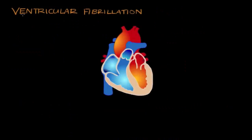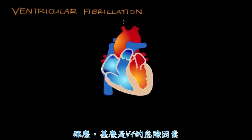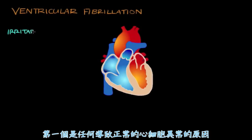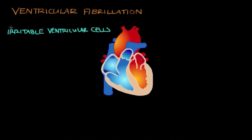What are the major risk factors of V-fib? I like to separate them into two categories. The first is anything that causes general irritability to the ventricular cells. An irritable ventricular cell means it's likely to over-fire or fire abnormally.